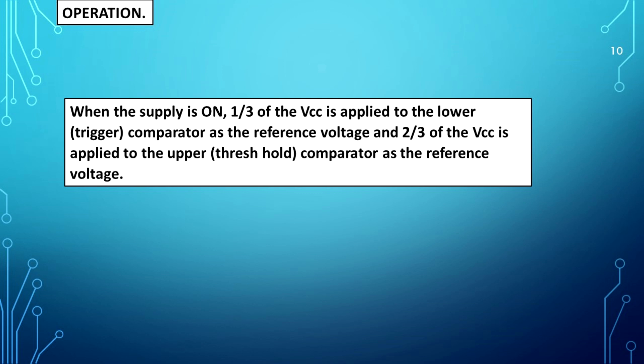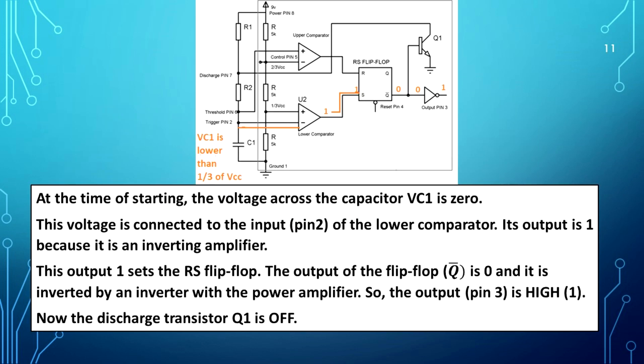When the supply is on, one third of VCC is applied to the lower comparator as the reference voltage and two thirds of VCC is applied to the upper comparator as the reference voltage. At the time of starting, the voltage across the capacitor VC1 is 0. This voltage is connected to the input of the lower comparator. Its output is 1 because it is an inverting amplifier. This output 1 sets the RS flip flop.